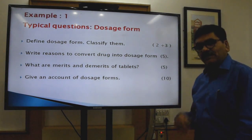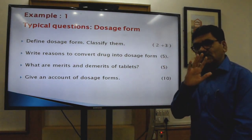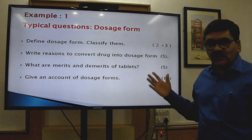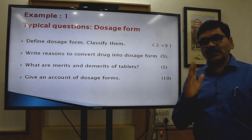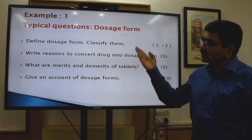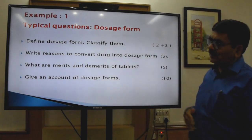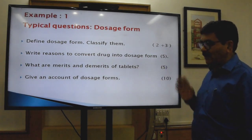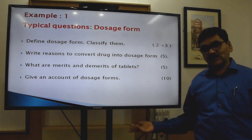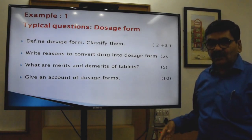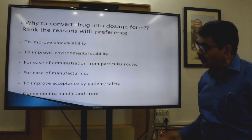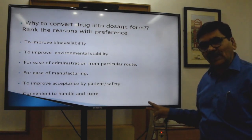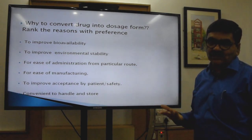Here are some examples. The first chapter covers the general topic for pharmaceuticals: why convert a drug into a dosage form? Typically we explain the definition of dosage form and the reasons. Such questions include: 'define dosage form,' 'classify it,' 'list reasons to convert drug into dosage form,' 'what are the merits and demerits of tablets,' 'give an account of dosage form.' If we see again, the method is memorization only. But if we ask the same thing with logical thinking, it covers all the points and the question can be worth 2 marks or 10 marks.